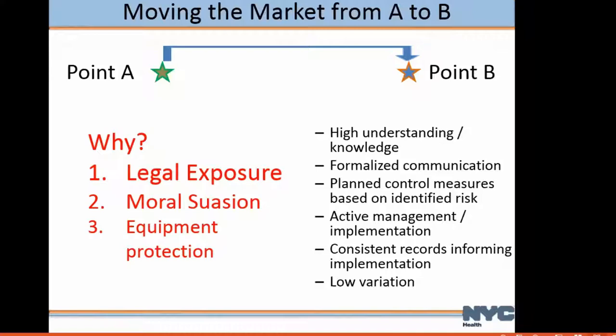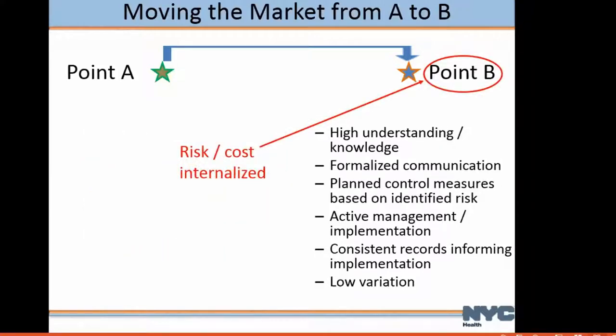Plans should start to look at least conceptually similar — the same general approaches, customized by different buildings. Now they're doing it because they understand the risk, there's legal exposure, and it's still the right thing to do. Here the risk and cost is internalized. Point B is expensive — think about our market with big fancy buildings in Manhattan and small mom-and-pop grocery stores in the Bronx that might have a cooling tower.